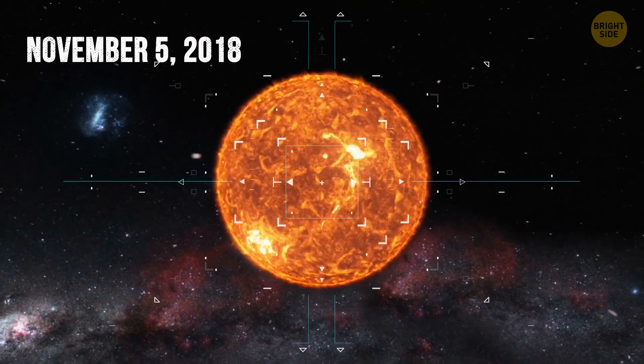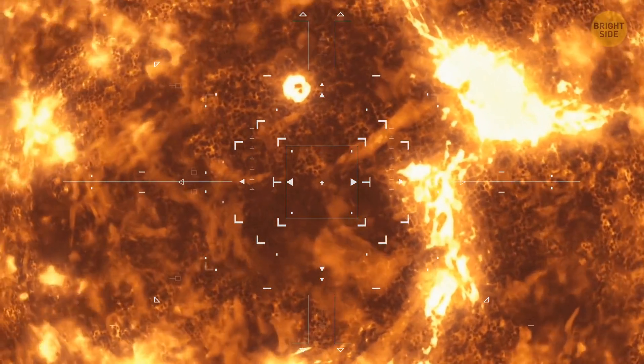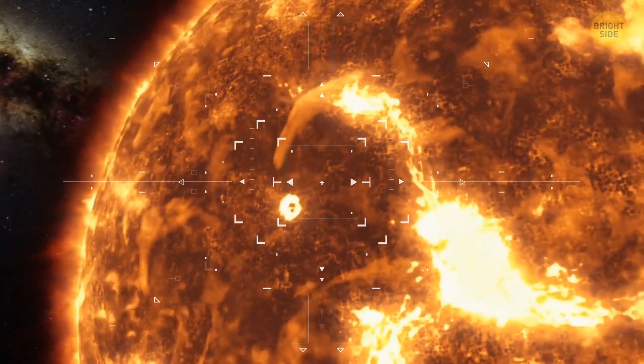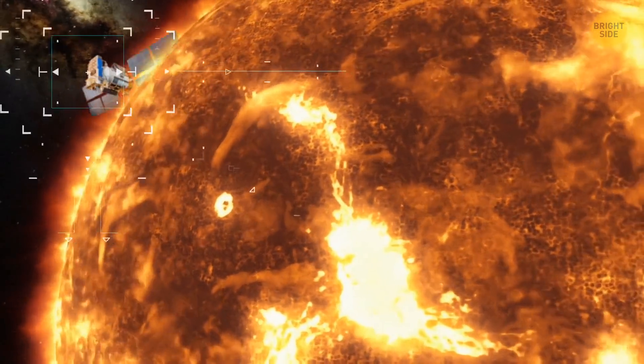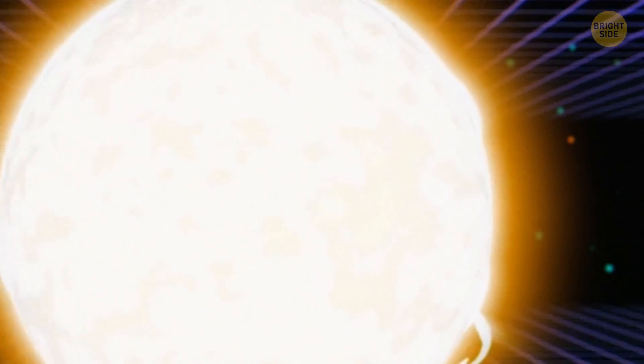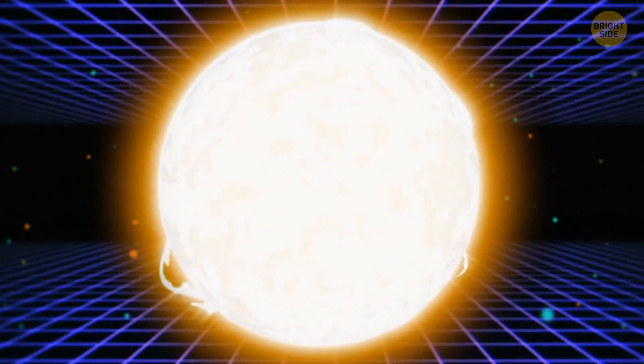On November 5, 2018, the Parker Solar Probe made its first approach to the sun. Before touching its surface, the spacecraft had to enter the star's orbit first. To achieve this, it did even more gravitational maneuvers. Only after that did it start circling the sun, the heaviest object in the solar system with the most powerful gravity.